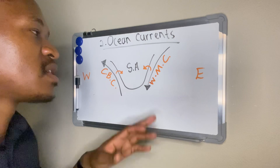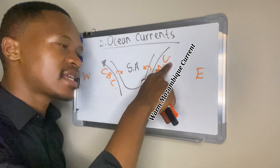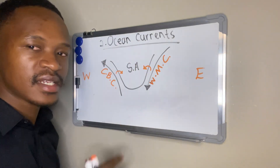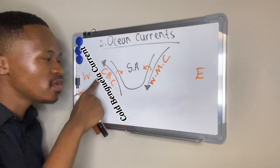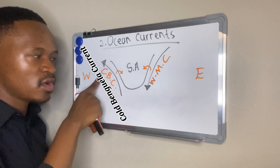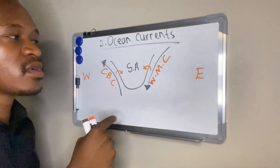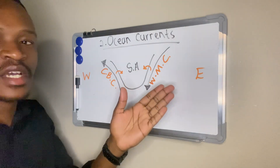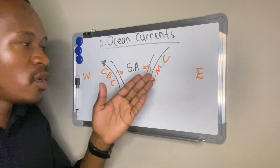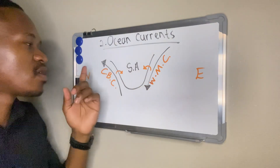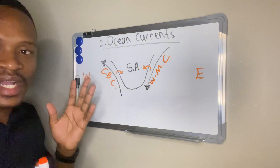These ocean currents have specific names. At the east of South Africa we have the warm Mozambique current, which originates at the equator, hence it is warm. On the west we have the cold Benguela current. Whenever asked about the ocean current affecting South Africa on the east, say it is the warm Mozambique current. On the west, it is the cold Benguela current.